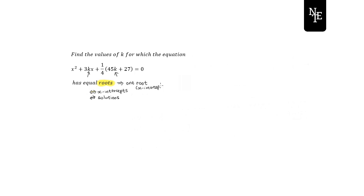What's different between this quadratic and normal quadratics like x squared plus 2x plus 1 is that in this quadratic your a, b and c values are just normal constant terms, whereas here your b and c are given by some sort of a formula. So a is equal to 1, b is equal to 3k, and lastly c is equal to the whole expression 1 over 4 into 45k plus 27.